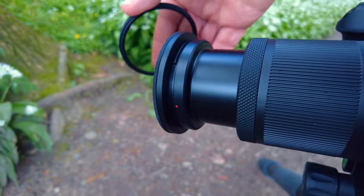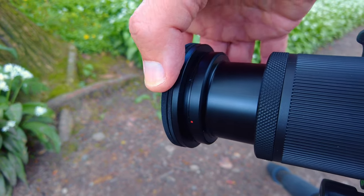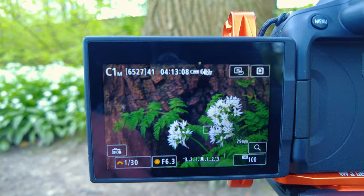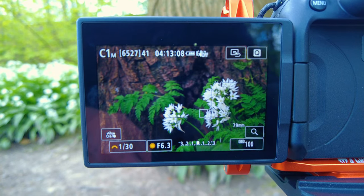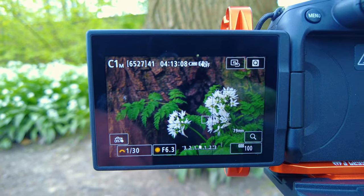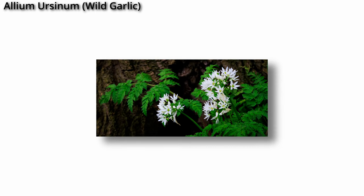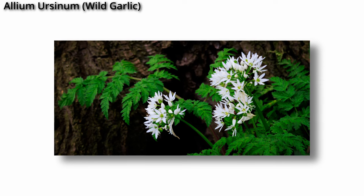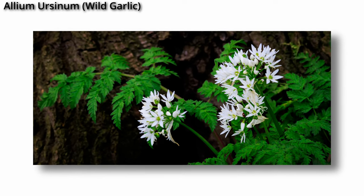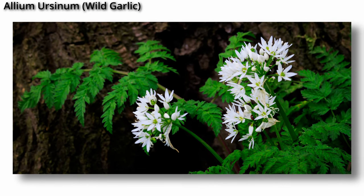I've got the polariser on. Although it's an overcast day, I do have the polariser on just to cut out reflective light on the green. I'm going to capture this image at f6.3 because I want to make sure that the flowers are sharp, but I want the tree in the background to be slightly defocused — just so it gives us that context and continues to draw the eye onto the flowers.